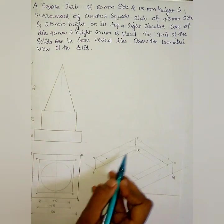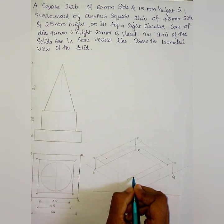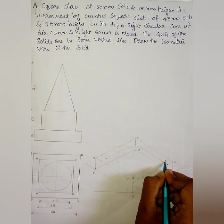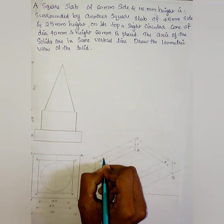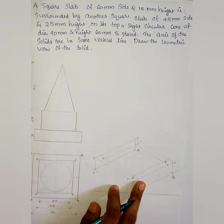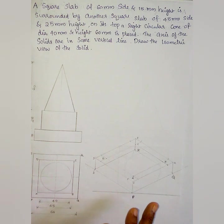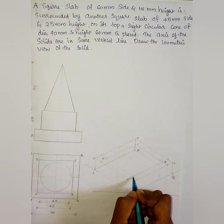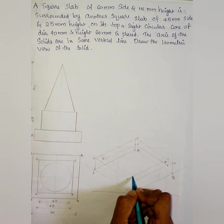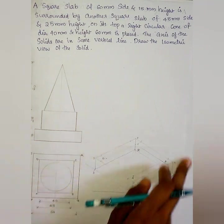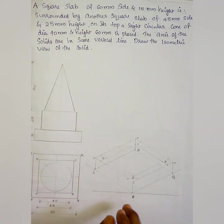Using the 7.5mm offset, we mark the four corner points a, b, c, d of the second square slab on the top face. The second square slab has a height of 25mm, so from each of points a, b, c, d we draw a vertical line of 25mm height.